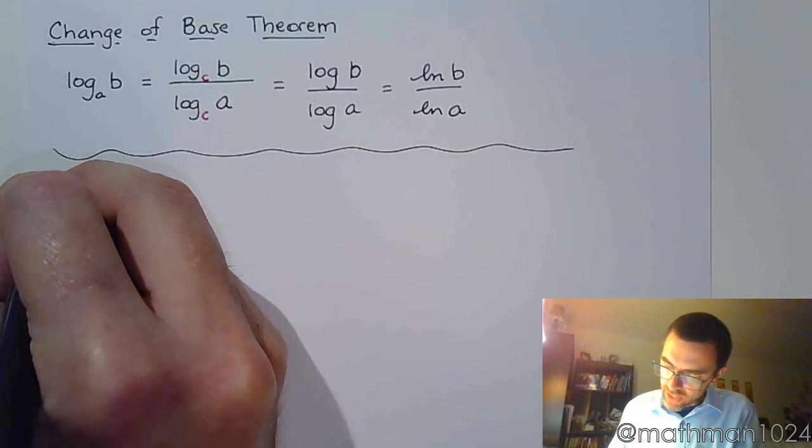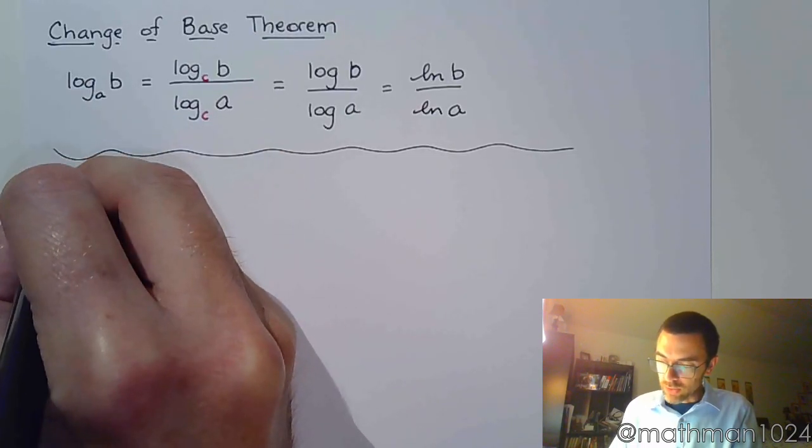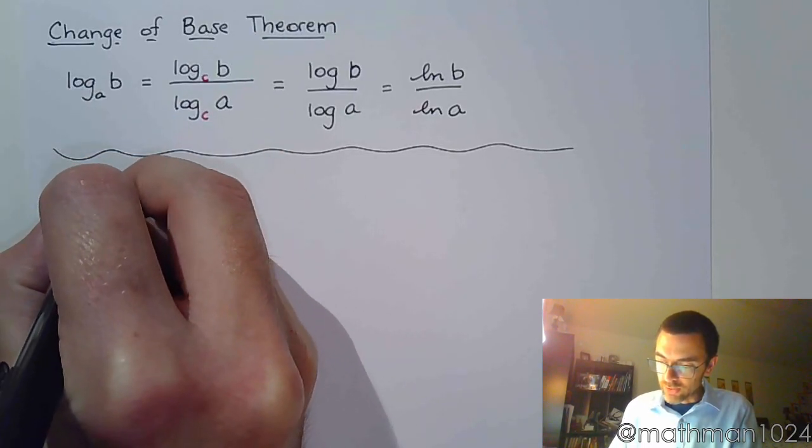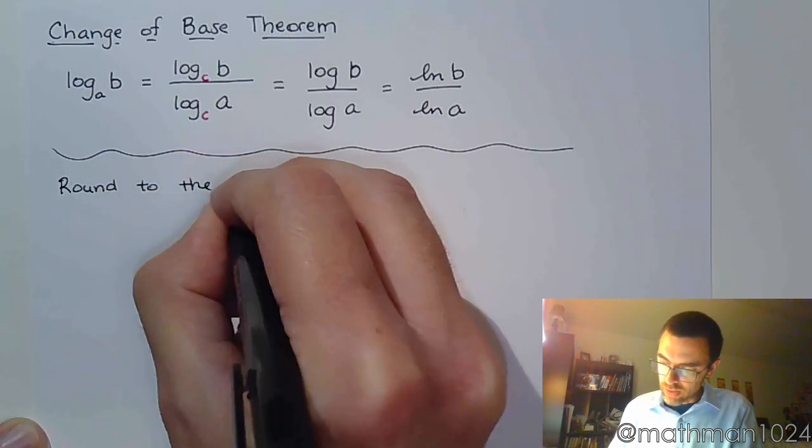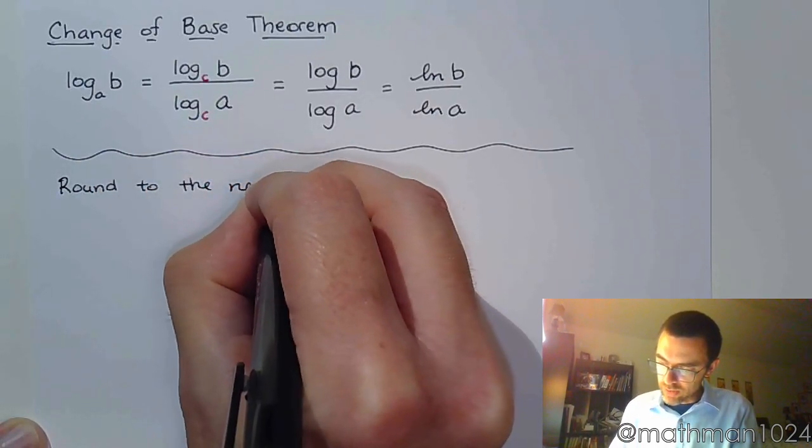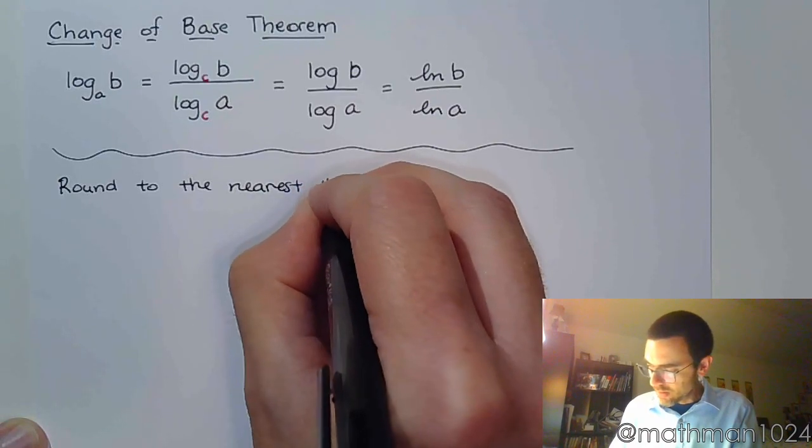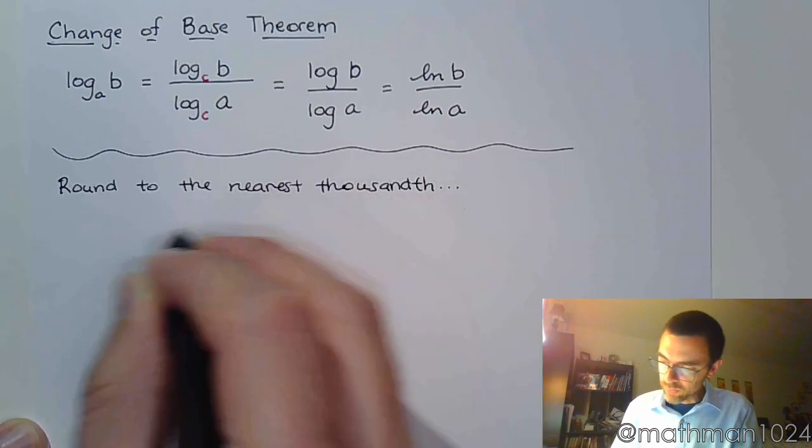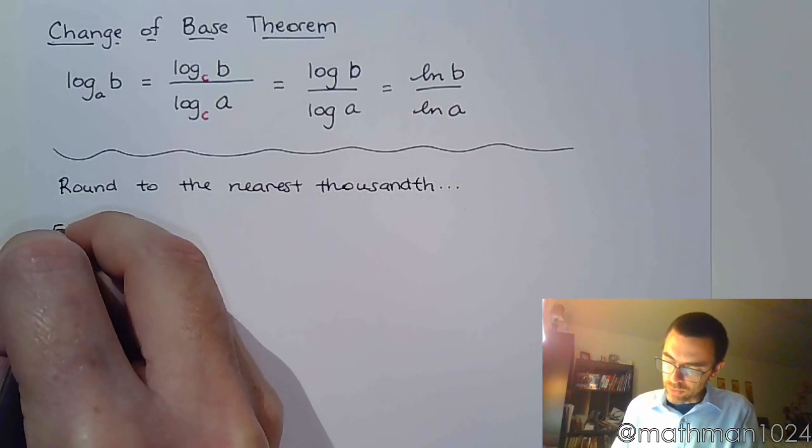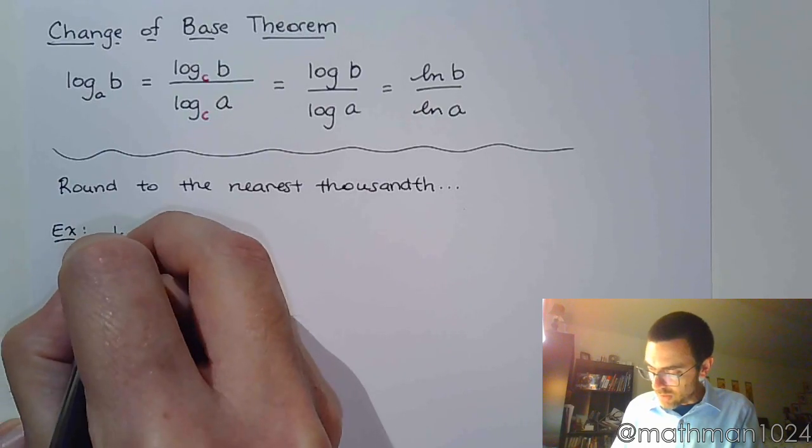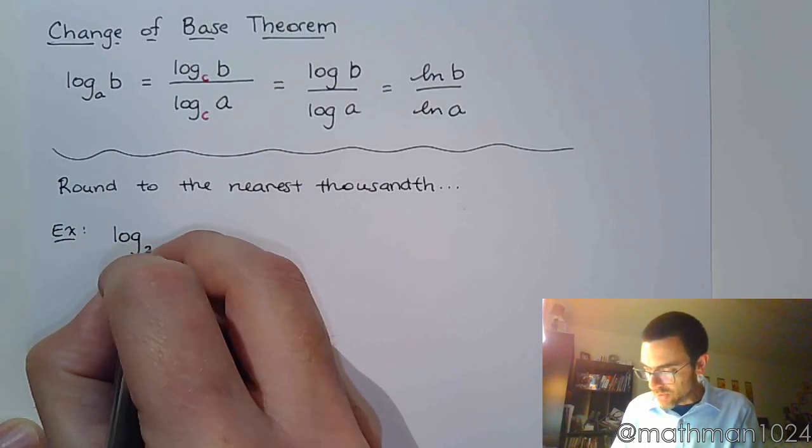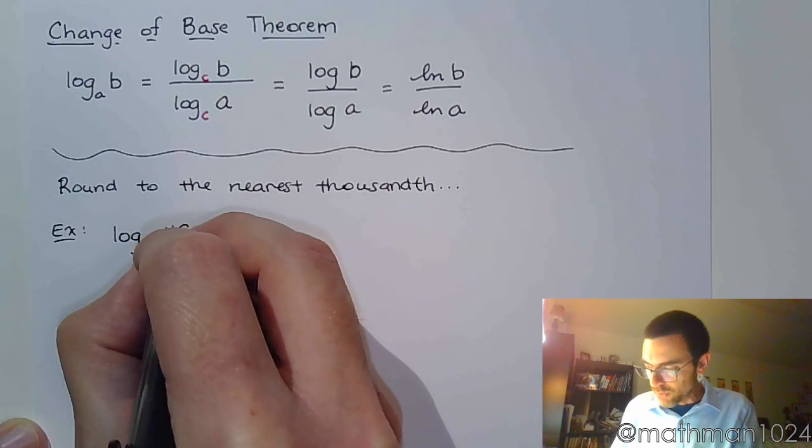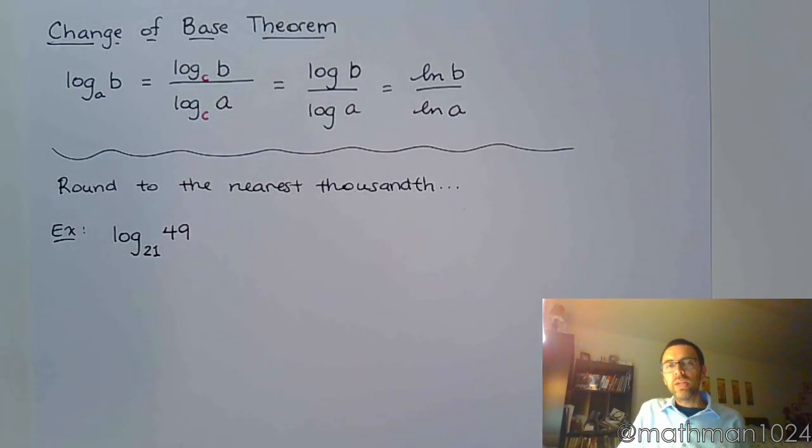If I ask you to round to the nearest thousandth, for example, this guy: I want you to find log base 21 of 49. Now, if these had the same base or could be written as the same base, this would be super easy.